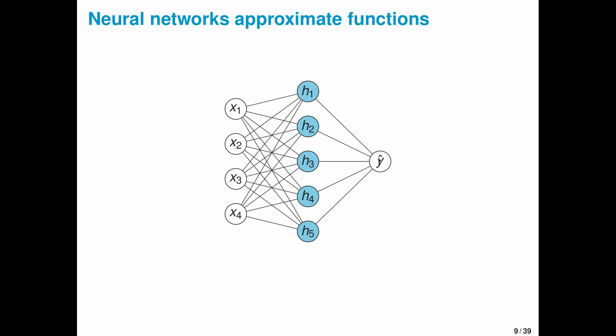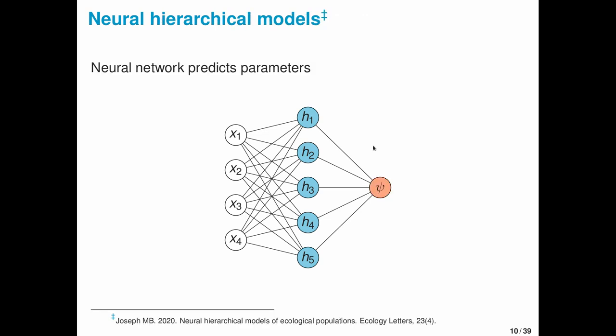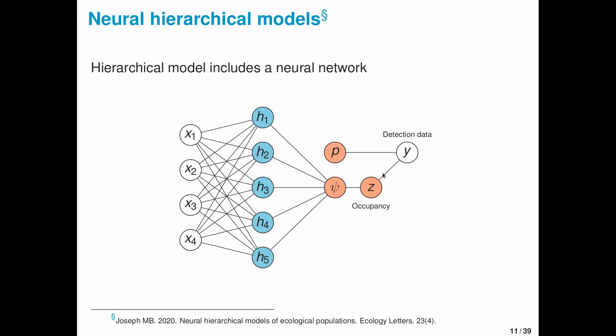And so if we're not satisfied with simply predicting data, what could we do? Neural hierarchical models use neural networks to predict parameters. All I've done here is I've replaced our predicted data y hat with a predicted probability of occupancy psi. In these models, the hierarchical model includes a neural network. Put differently, the neural network is embedded within a hierarchical model, and we can estimate the parameters of our hierarchical model and this neural network.